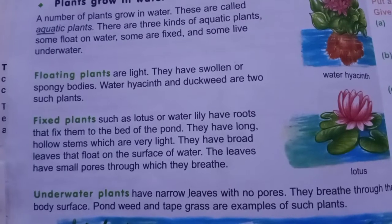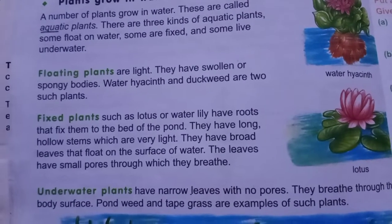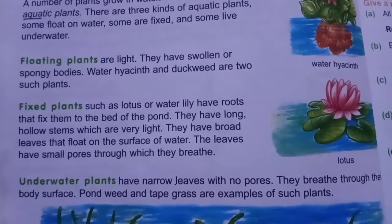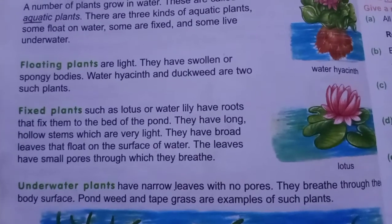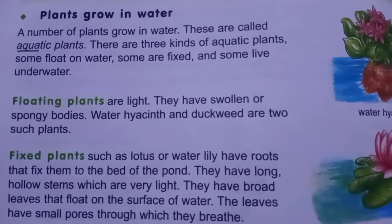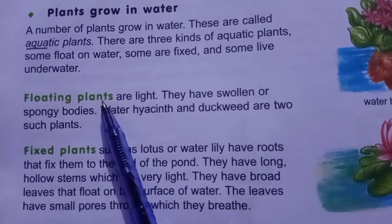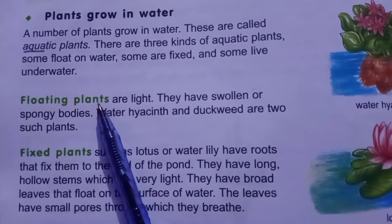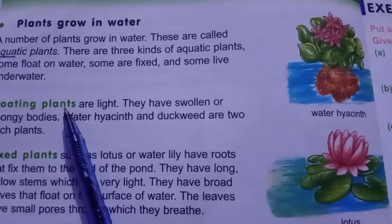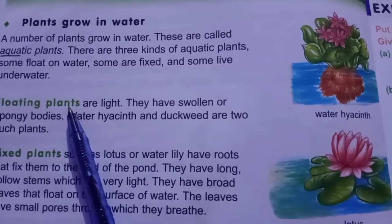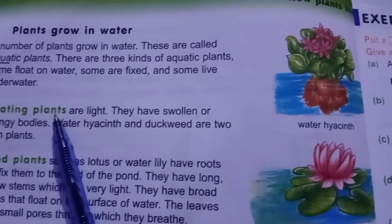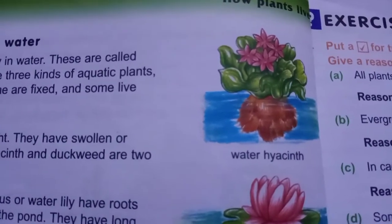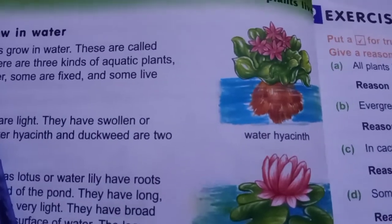Aquatic plants کی تین قسمیں ہوتی ہیں: some float in water, some are fixed, and some live underwater. First I am explaining floating plants. Floating plants وہ plants ہوتے ہیں جو کسی بھی surface کے ساتھ attached نہیں ہوتے — بہت زیادہ light weight ہوتے ہیں، that's why وہ پانی کے اوپر تیرتے ہوئے نظر آتے ہیں۔ ان کی examples میں water hyacinth اور duckweed آتے ہیں۔